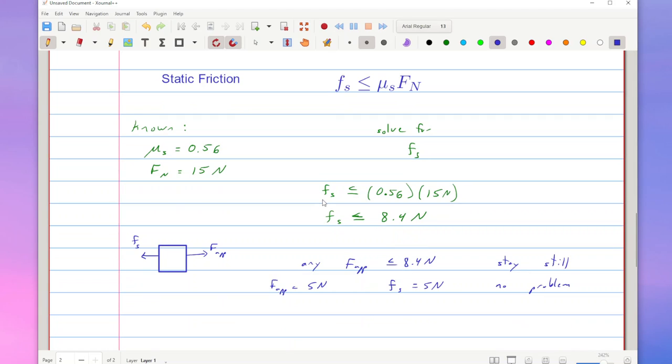But if I tried to put an applied force of 10 newtons on that particular thing, friction is going to say, I got to be less than or equal to 8.4, and it's going to move. Static friction can't hold it in place.